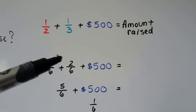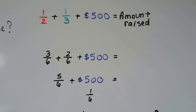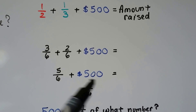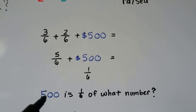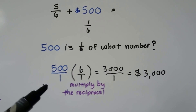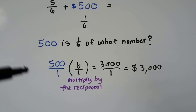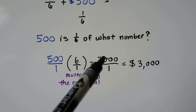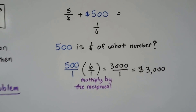Three-sixths plus two-sixths is five-sixths, and plus the $500 is going to give us our total. Well, if this is five-sixths, then this must be one-sixth. So $500 is one-sixth of what number? We multiply by the reciprocal, six over one. We put $500 over one and multiply straight across. Five-hundred times six is three-thousand, one times one is one, which simplifies to three-thousand. We know Emma raised three-thousand dollars.